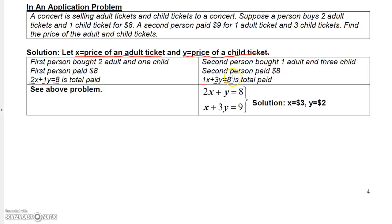But anyway, when I put these together, I get 2x plus y equals 8, and x plus 3y equals 9. And then you can solve this by the substitution method to get 3 and 2. This is the same system I think I solved earlier. So you can go back and see that if you need to.